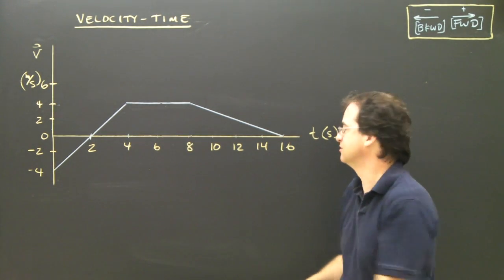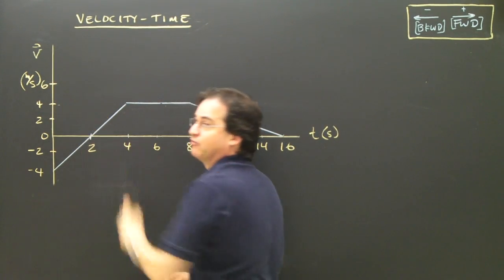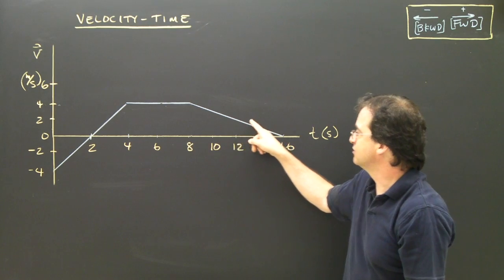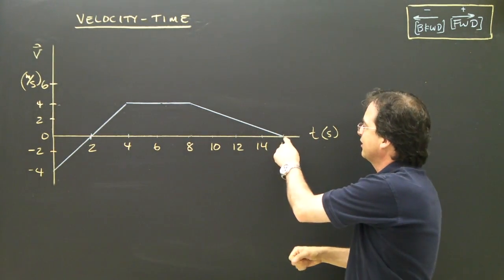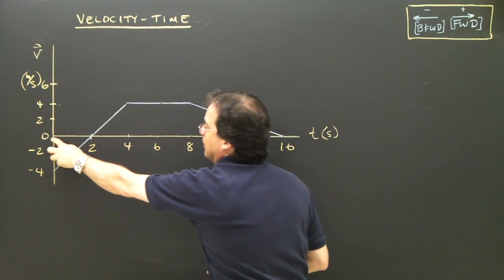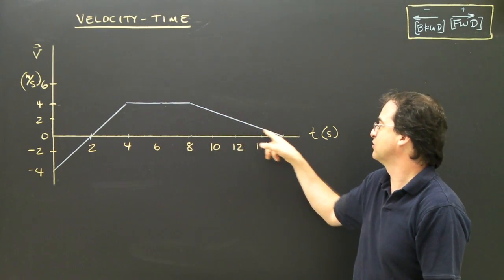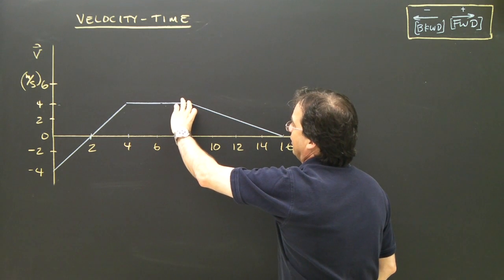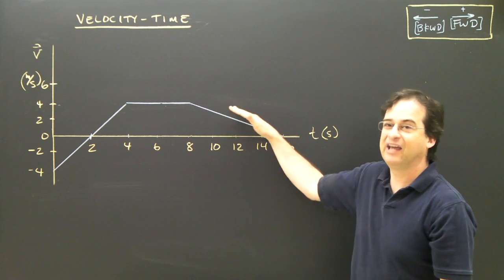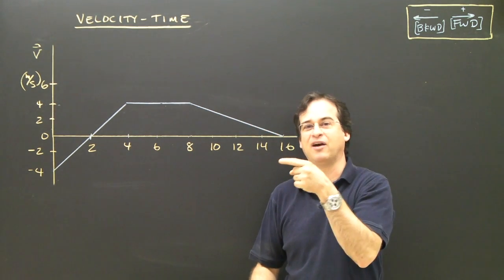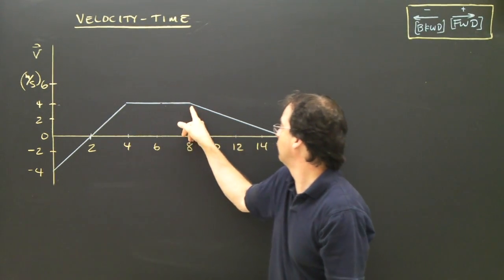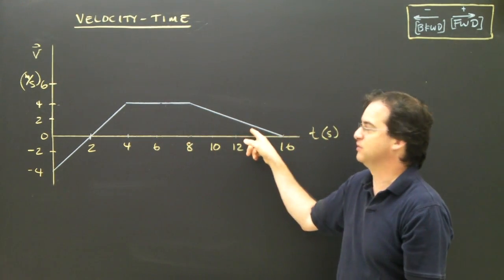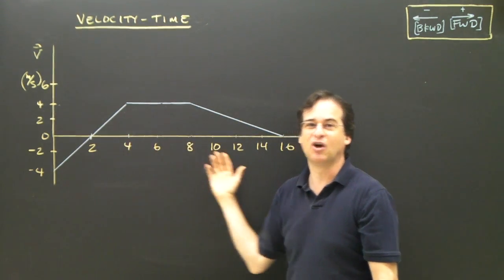From 8 to 16 seconds: at 8 seconds I'm at 4 meters per second running forward. At 10 seconds it's a smaller positive number — I'm running slower. At 12 seconds it's still positive but slower still, until at 16 seconds I reach 0 meters per second — I've stopped. So this section shows moving forward and getting slower. The slope here is negative: the height is 4 and the run is 8, giving a negative slope. That means I'm accelerating west while running east — so I'm slowing down. That's about the most complicated VT graph we're going to have.